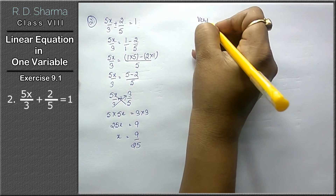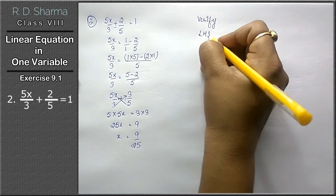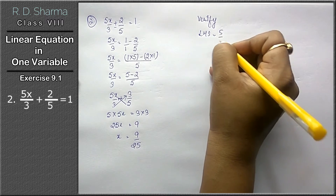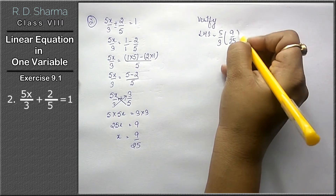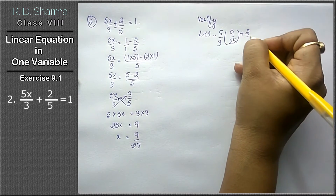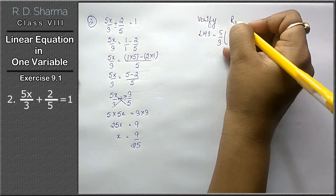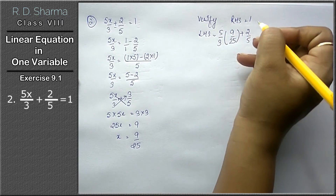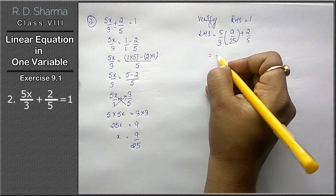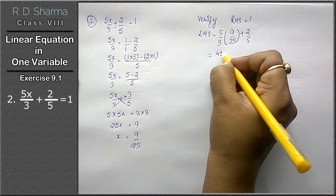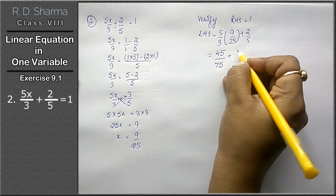Let's verify. Left hand side: substituting x equals 9 upon 25, we get 5 upon 3 times 9 upon 25 plus 2 upon 5. The right hand side is 1. We have to prove that calculating the left hand side gives us 1 only. That gives 9 fives of 45 upon 75 plus 2 upon 5.